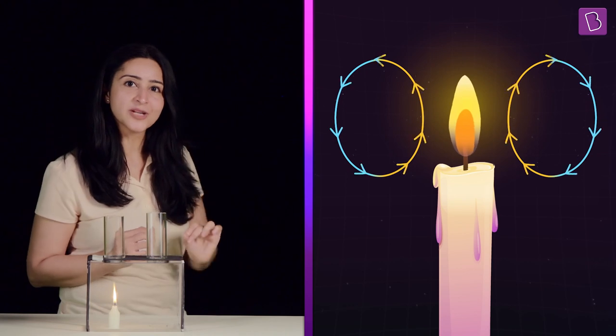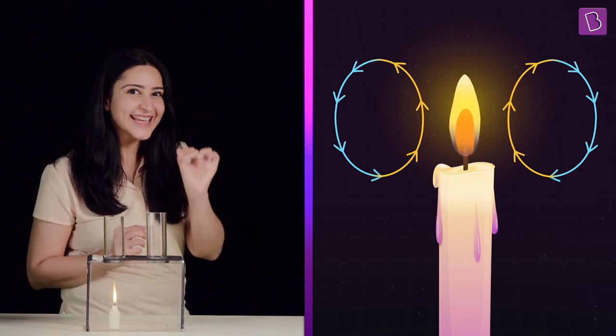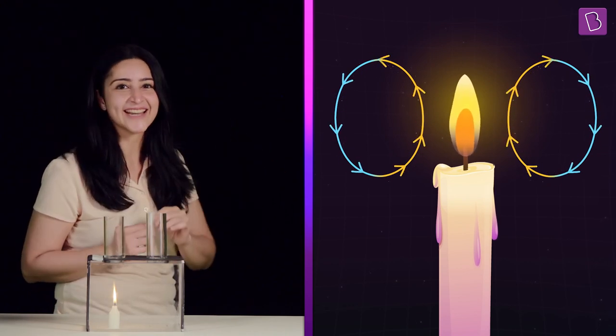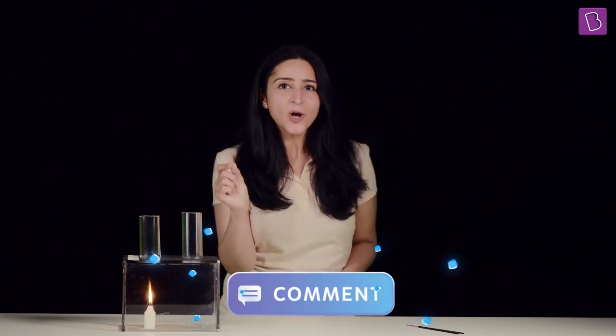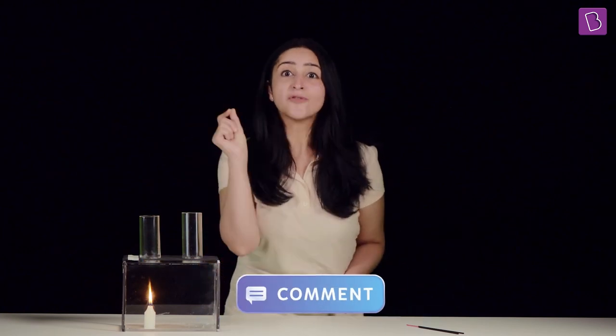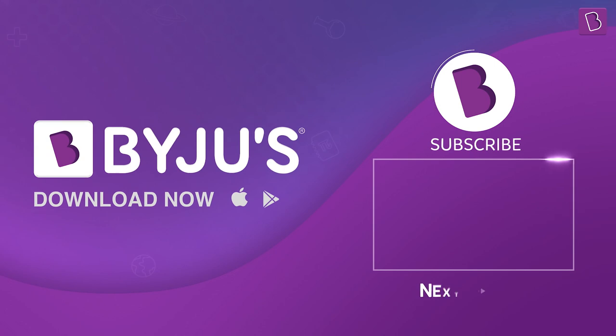Without the convection cycle, the hot gases released in all directions during the burning of the wick would make the flame look circular. But due to the continuous upward movement of air close to the flame, its shape gets elongated. So we've seen how convection cycles work in air — leave a comment below if you think convection currents are set up in water too, and subscribe for more such engaging videos.